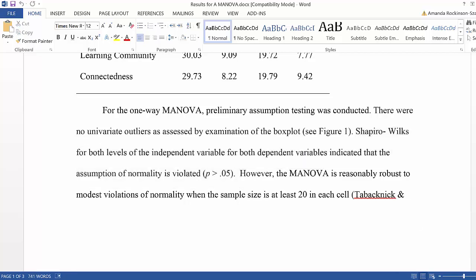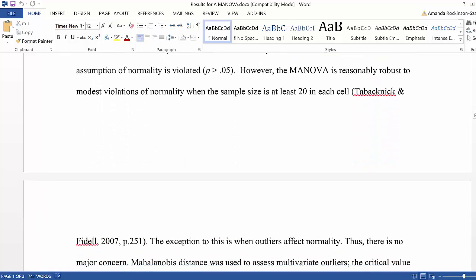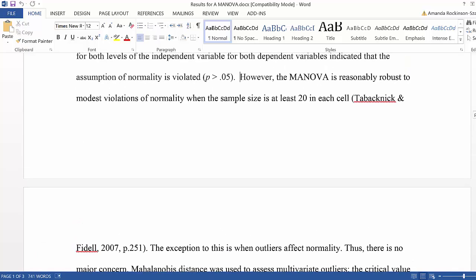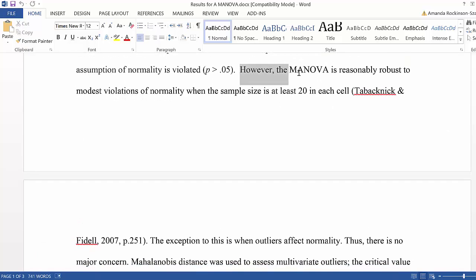However, since there was a violation of assumption, I have to note how I dealt with it or why, and then why I dealt with it in that manner. So I said, however, the MANOVA is reasonably robust to modest violations of normality when the sample size is at least 20 in each cell, as stated by Tabachnick and Fidell, and I provide the page number and the reference.